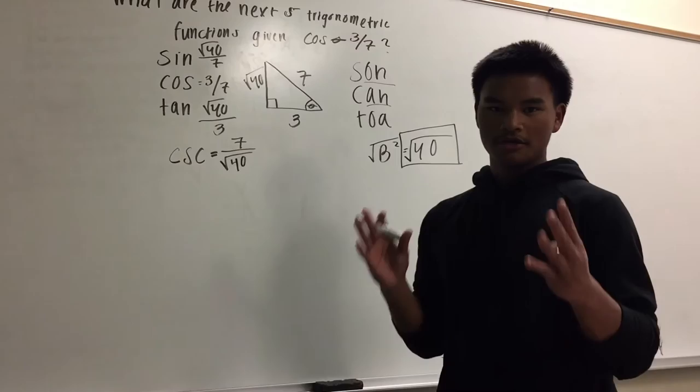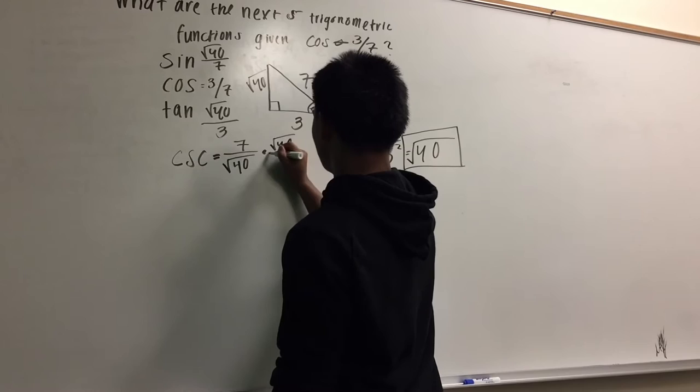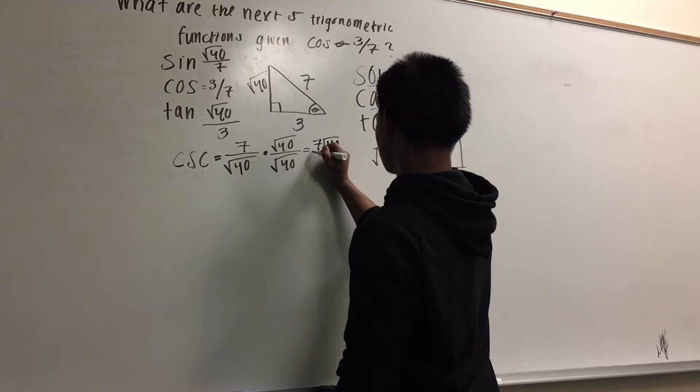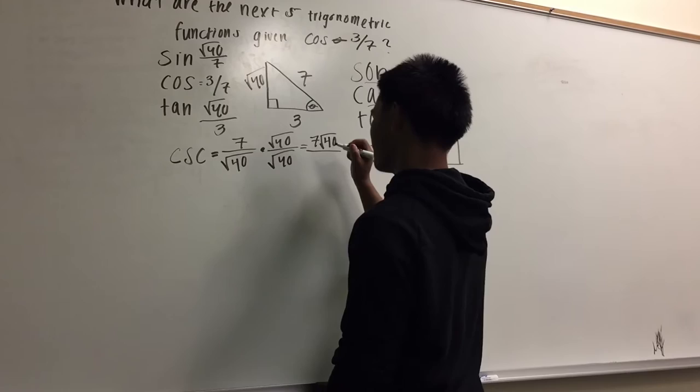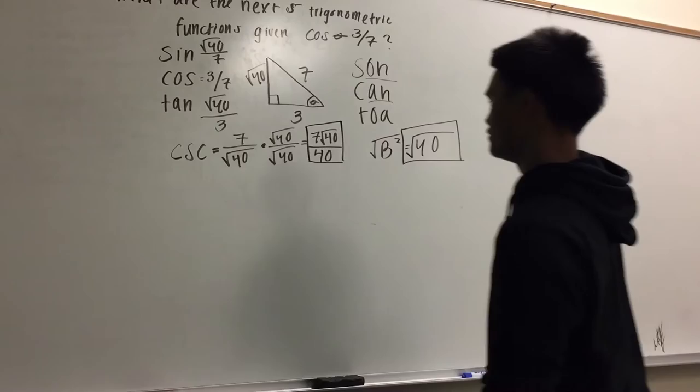Okay, so, here, you could leave it like this, but most mathematicians don't. So, what we do here is rationalize. So, what we do here, we times it by square root of 40, and that equals 7 square root of 40 over 40. So, this is the way most mathematicians like to do, they're rationalizing. And so, you do the same to tangent.